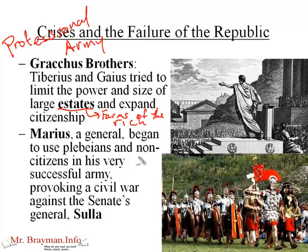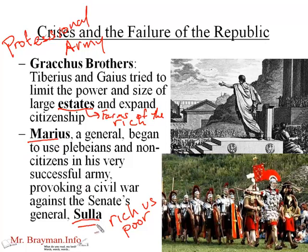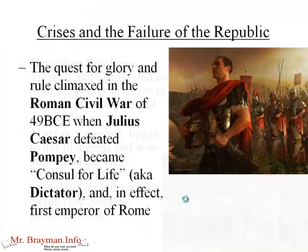After them, you get the general Marius, who begins to use plebeians and non-citizens in his army. He's a brilliant general and his men would follow him anywhere. This provokes a civil war against the Senate's general, a man named Sulla. This is really a battle of rich versus poor — the rich have land, money, and political power; the poor have numbers and a desire to fight. Marius, the great leader of the poor and the plebeians, versus Sulla, the rich people's man. You can see how this would absolutely tear the republic apart.